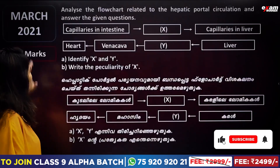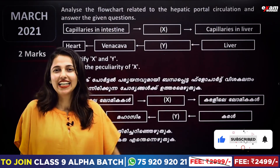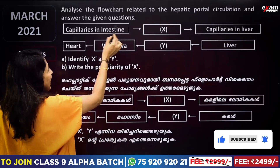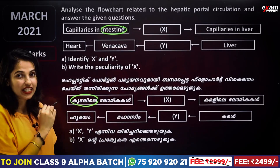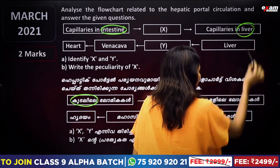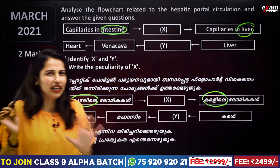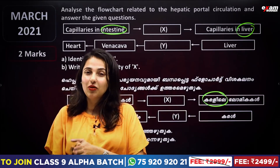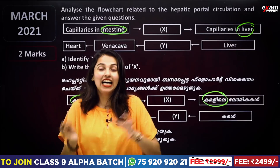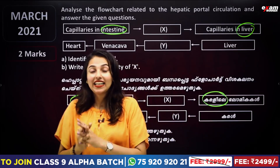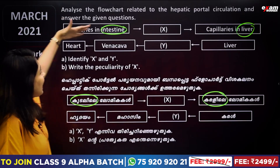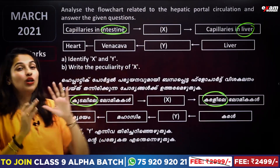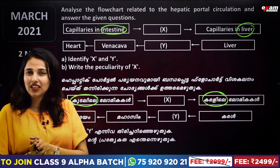We will go to the first question. We will talk about the intestines, the liver, and how does this circulate? Now, we will ask: analyze the flowchart related to hepatic portal circulation.